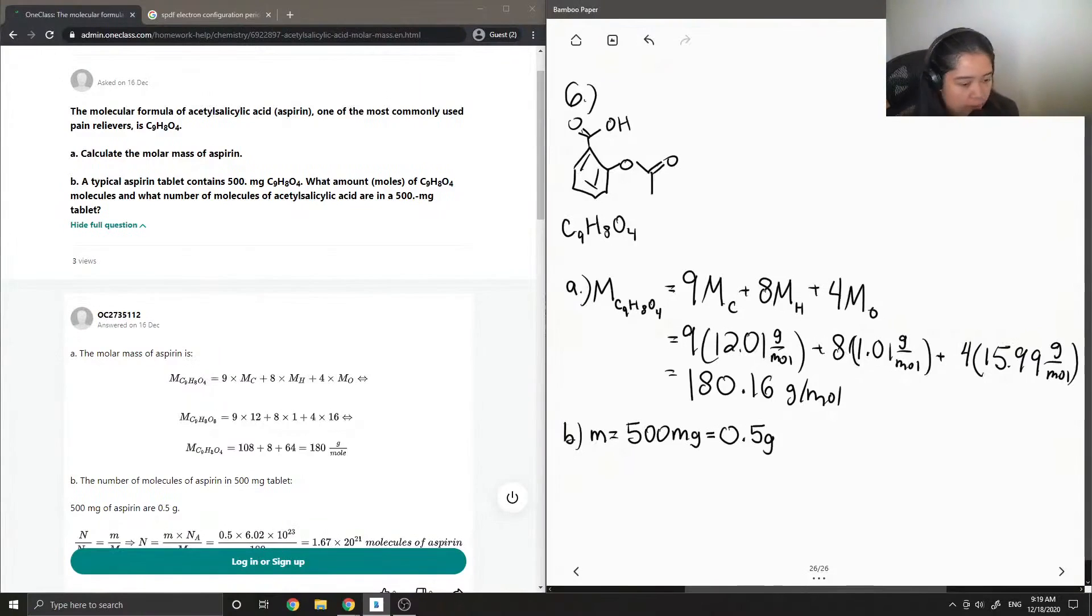Okay, so now let's calculate the number of moles using the equation N equals mass over molar mass. So our mass is 0.5 grams, and molar mass is just what we found in the previous part, which is 180.16 grams per mole.